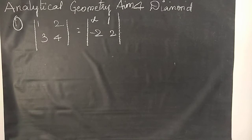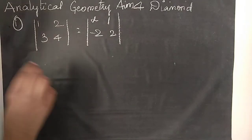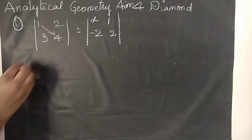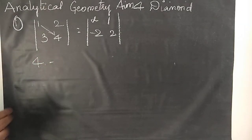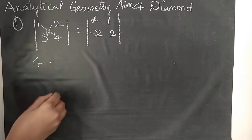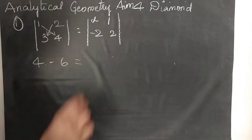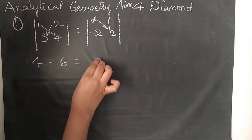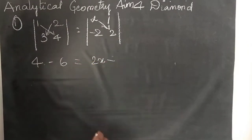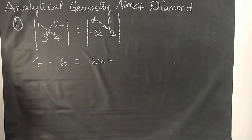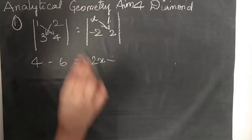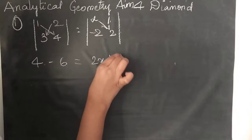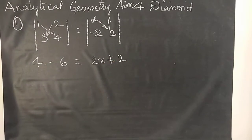First we have to do AD minus BC for both sides. So AD: 1 into 4 is 4. Minus BC: 2 times 3 is 6. On the right side: x into 2 is 2x, minus 1 into minus 2, which is minus 2. So minus into minus is going to be plus, so directly I put plus.